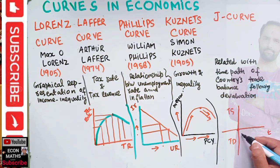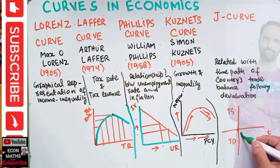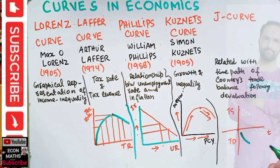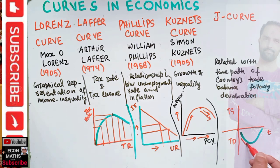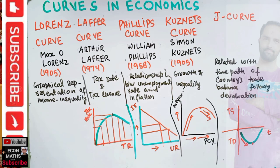The J-curve tells us that trade deficit will initially worsen after currency devaluation. If we devalue our currency, the trade deficit will initially increase, as the price of exports rises before the quantity can adjust. But with the passage of time, the trade deficit will decrease — it shrinks and gets lower and lower.